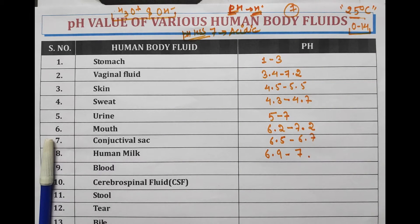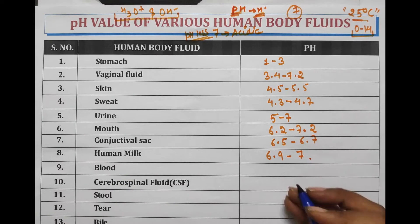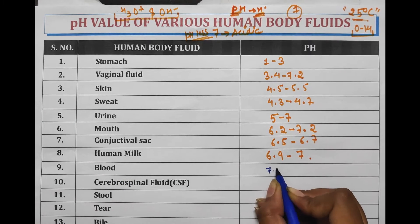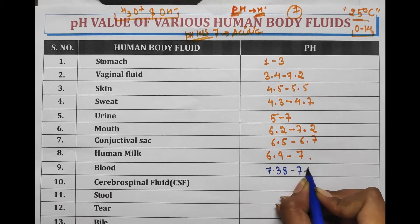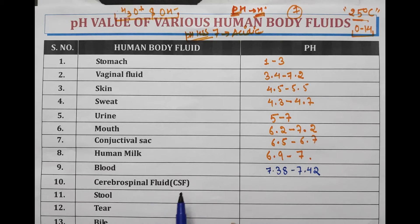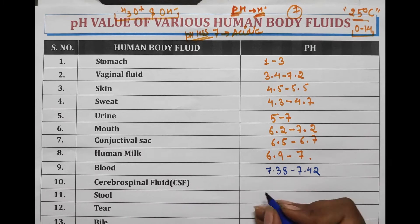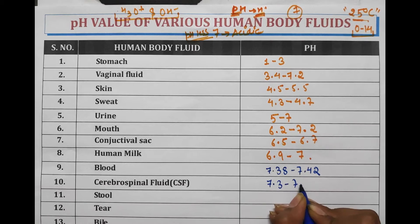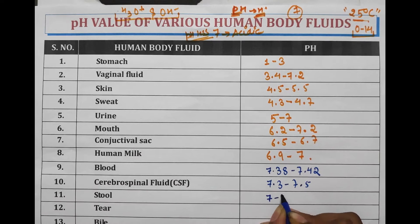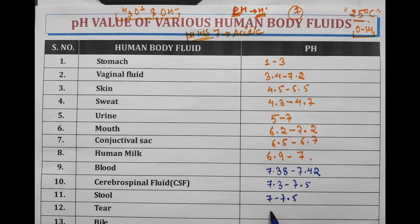Now we will discuss some basic organs or fluids. Blood has a pH range from 7.38 to 7.42. Cerebrospinal fluid (CSF) has a pH range from 7.3 to 7.5. Stool has a pH of about 7 to 7.5. Tear has a pH range from 7.2 to 7.4. And lastly, bile has a pH range from 7.4 to 8.5.